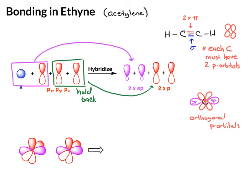Now that we have our two carbons, what will happen is we have a head-on overlap of the sp hybrid orbitals, and that will form the carbon-carbon sigma bond — that's the first bond between the carbons. Then as those come together, the p-orbitals that are parallel to one another will overlap. The top lobe of one p-orbital will overlap with the other, and the bottom lobe will overlap as well. Then we have a second p-orbital where we get overlap on both lobes as well.